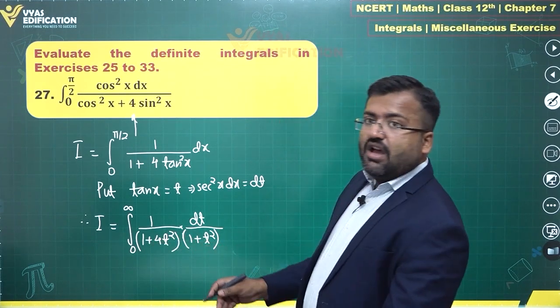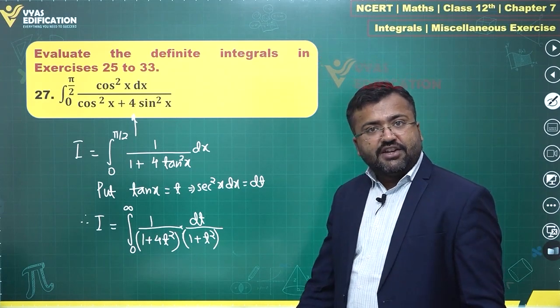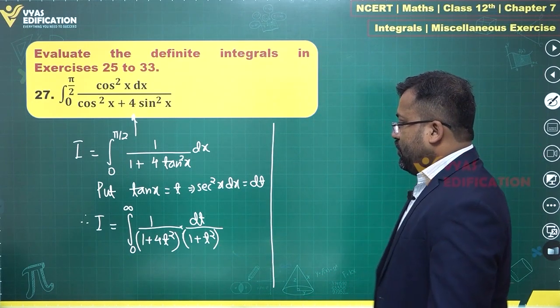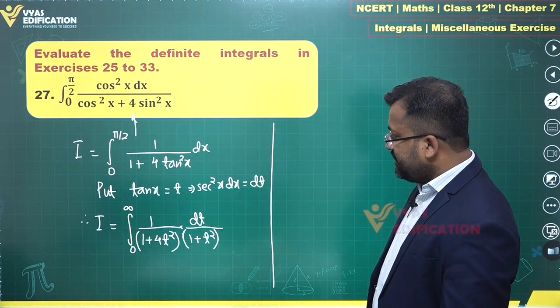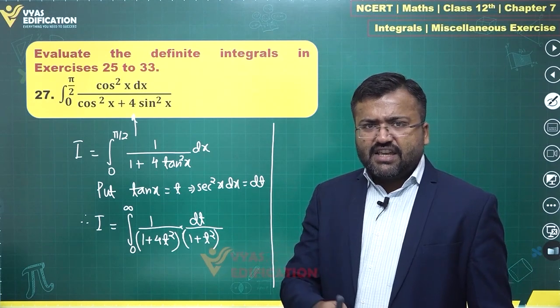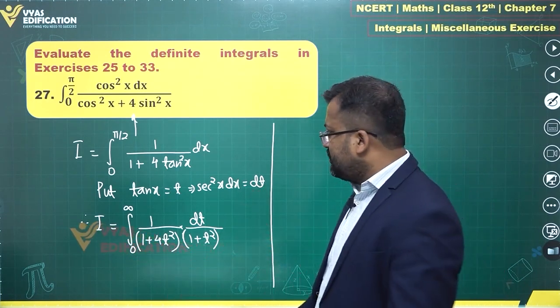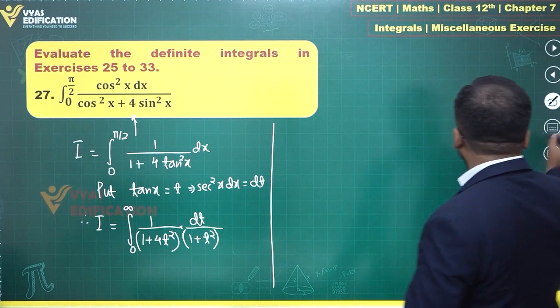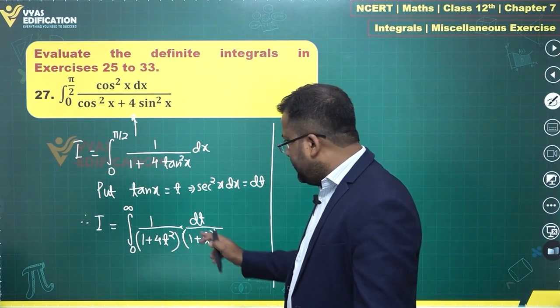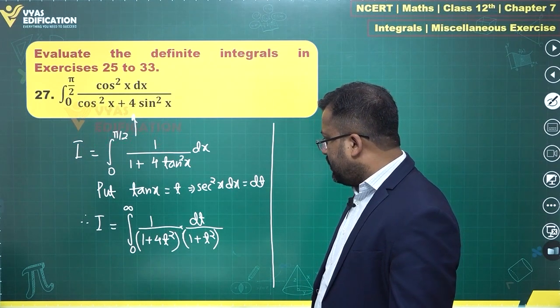These can be broken down into partial fractions. We can use the idea of partial fractions over here. How will we use partial fractions? One of the ideas is write it as A/(1+4t²) plus B/(1+t²). Or what I observe is why not multiply and divide with certain things. This 4t² and t², there should not be any t² at the top.